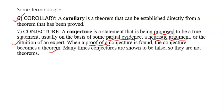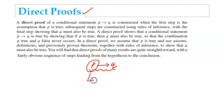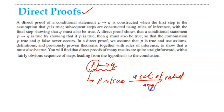Now let us talk about different proof methods. The first proof method we are going to discuss is the direct proof method. Suppose we have to find the proof of a conditional statement P implies Q. We start with the statement that P is true, and after following a set of valid arguments, if we are able to prove that Q is also true, then we say that P implies Q is true. This kind of proof is known as direct proof.